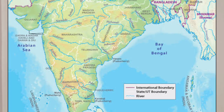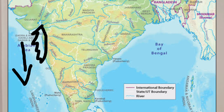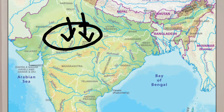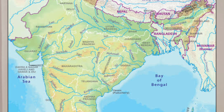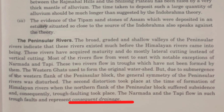Most peninsular rivers flow from east to west, with two exceptions: the Narmada and Tapi rivers. These two rivers flow in a trough that was not even formed by them. This trough was formed due to the submergence of the western flank of the peninsular plateau, and when a second distortion occurred, the northern flank of the peninsular plateau also got submerged. As a result, trough faulting took place in those particular areas, and the Narmada and Tapi rivers now flow in this trough.